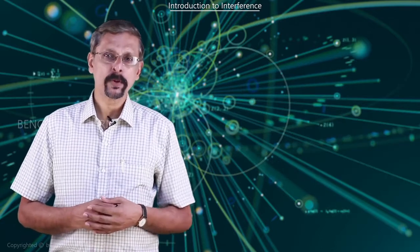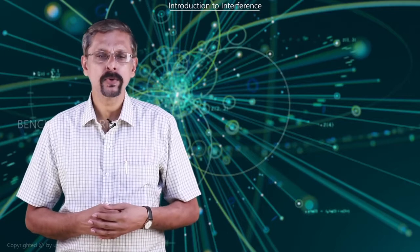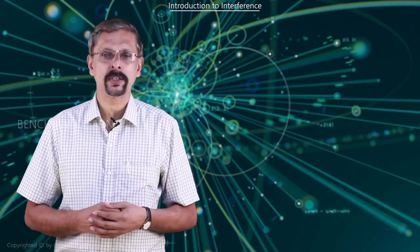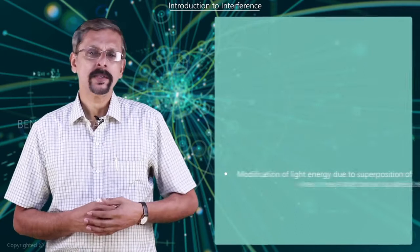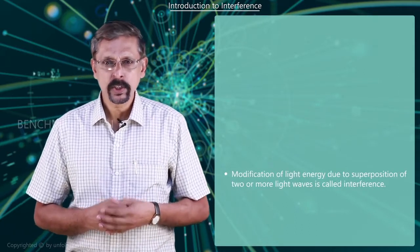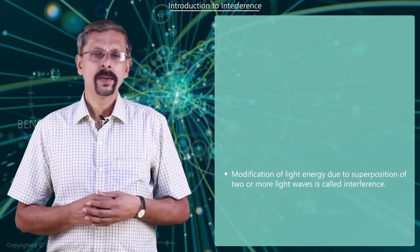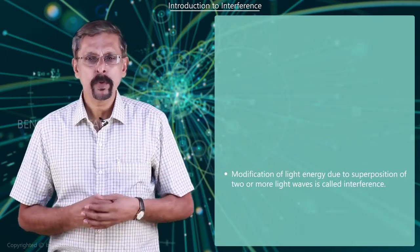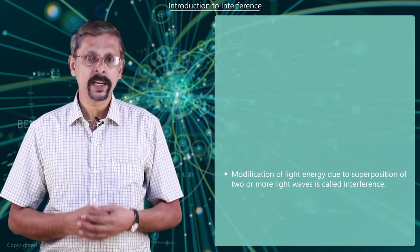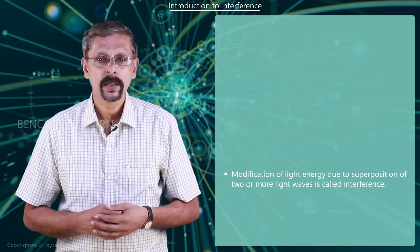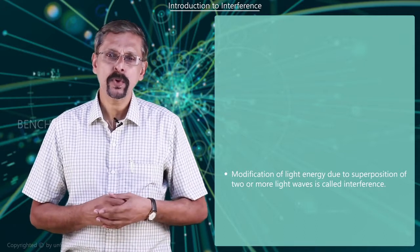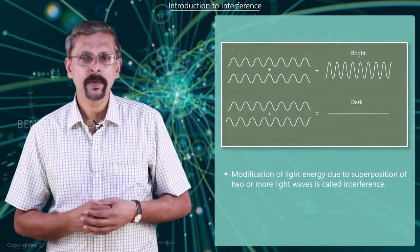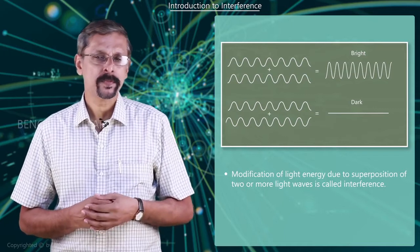Interference means superposition of two or more waves resulting in a modification of the distribution of light intensity. Thus, the modification in the distribution of light energy due to the superposition of two or more light waves is called Interference. Consider two light waves of the same wavelength and same amplitude.